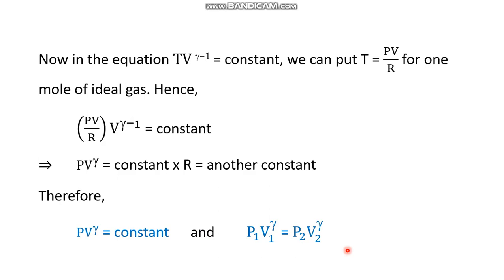Now in the equation TV^(γ−1) = constant, we substitute T = pV/R, since pV = RT for one mole of ideal gas. Putting pV/R in place of T and multiplying by V^(γ−1) gives p·V^(γ−1)/R = constant. Therefore p·V^(γ−1) = constant × R, and since R is a constant, we conclude pV^γ = constant. This gives the second relationship: p1·V1^γ = p2·V2^γ.